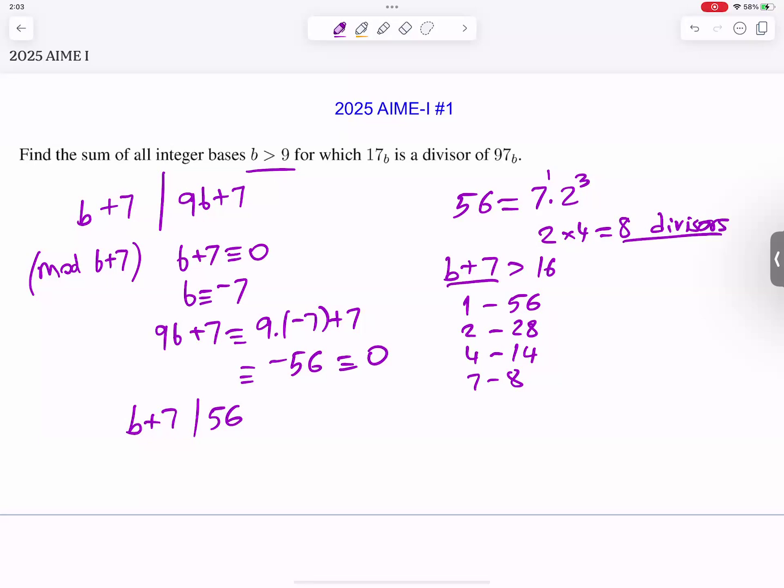And then these are candidates for b plus 7 and I want that to be at least 16. So these 6 do not work, and we are left with b plus 7 equals 56 or 28, and that leads to b equals 49 or 21 with a sum of values of 70.